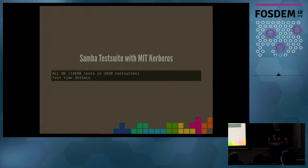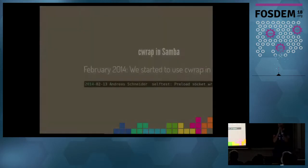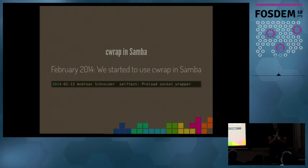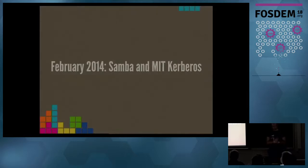Here is a test run of Samba with MIT Kerberos. We have a pretty big test suite - self-test has 2030 test suites, and in the meantime it's much more. It takes more than three hours to run. In Samba, as I said, we are test-driven. So how did we get there?